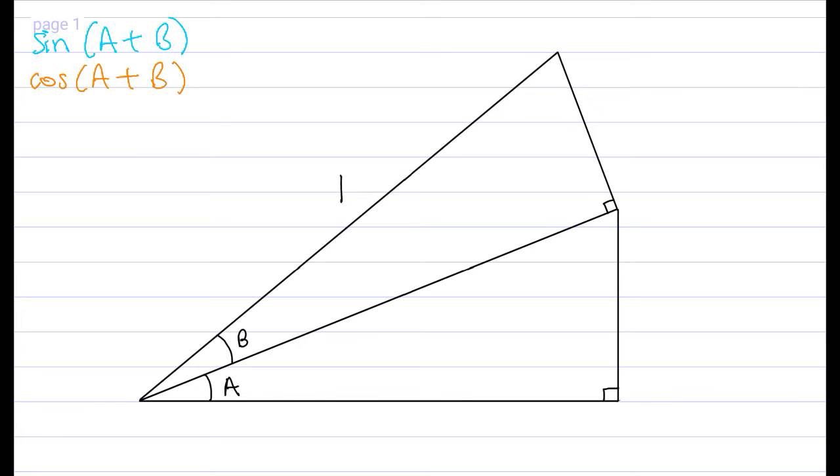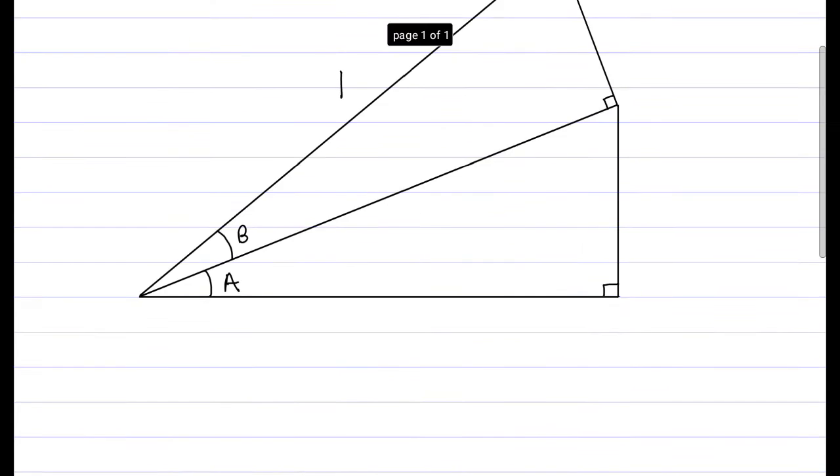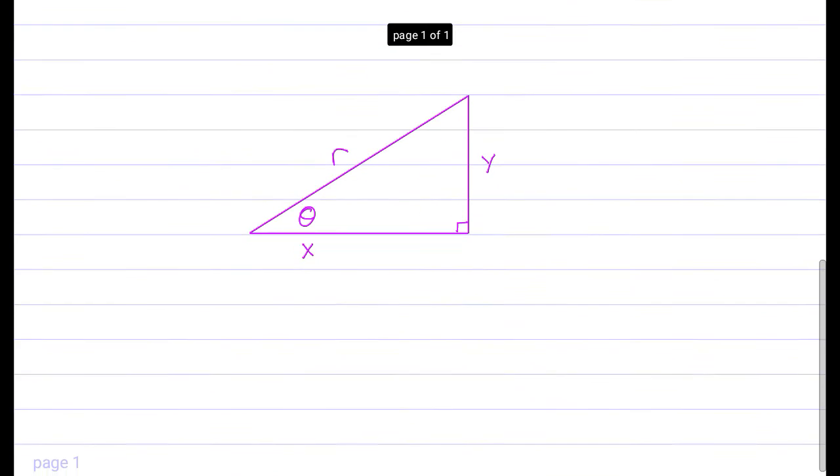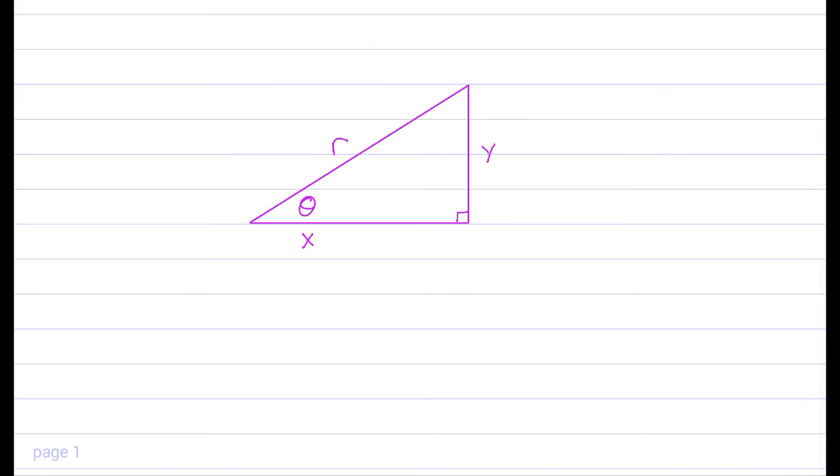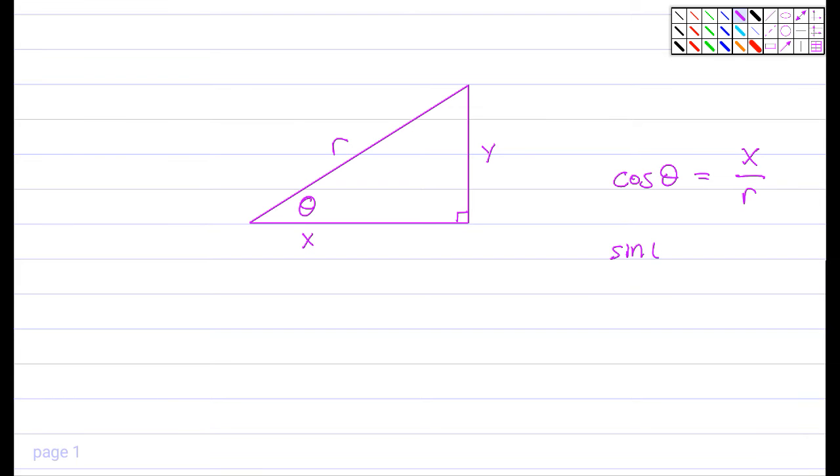Before we start with that, let's just get a little refresher on what the definitions of sine and cosine are. We're going to need this when we do this proof. Remember that cosine of theta is defined as x over r for a triangle like this. Sine of theta is defined as y over r.